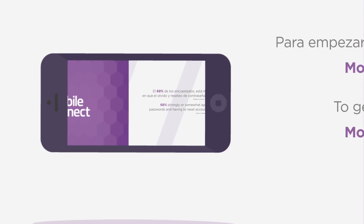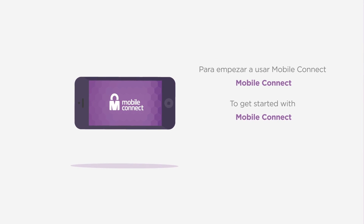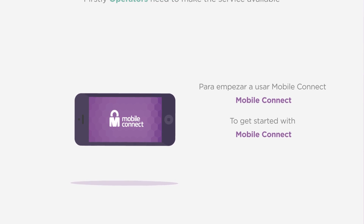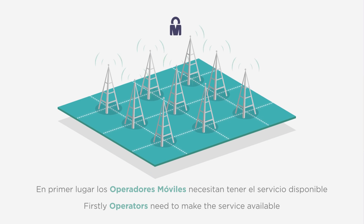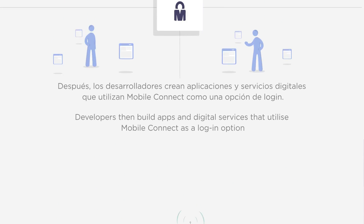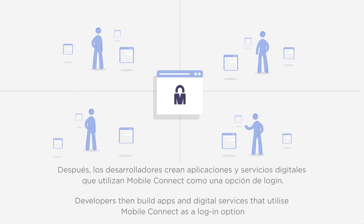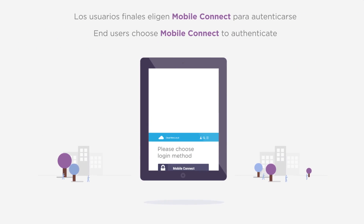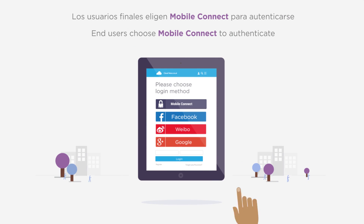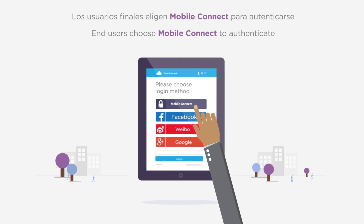In order to get started with MobileConnect, firstly operators need to make the service available. Developers then build apps and digital services that utilize MobileConnect as a login option, and finally end users can choose MobileConnect to authenticate.